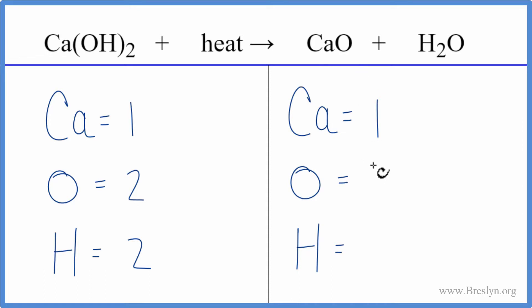On the product side we have one calcium, we have one oxygen, and don't forget this oxygen over here so we have two oxygen atoms. Then for hydrogens we have two hydrogen atoms right here and it looks like this equation is already balanced.